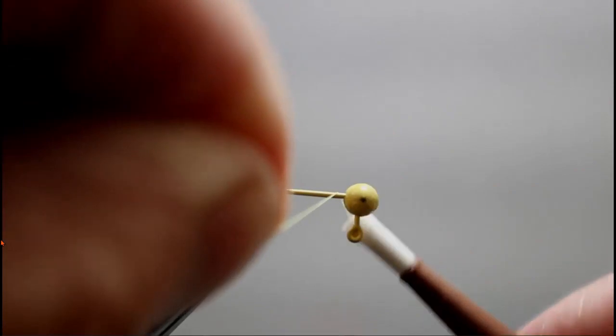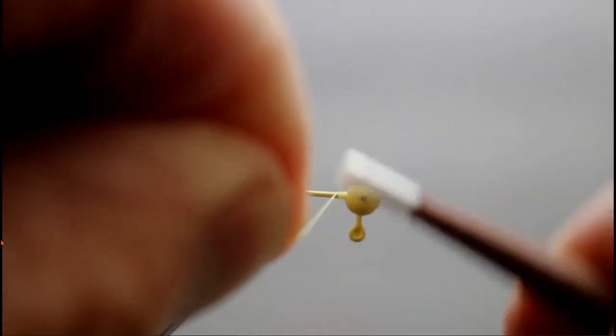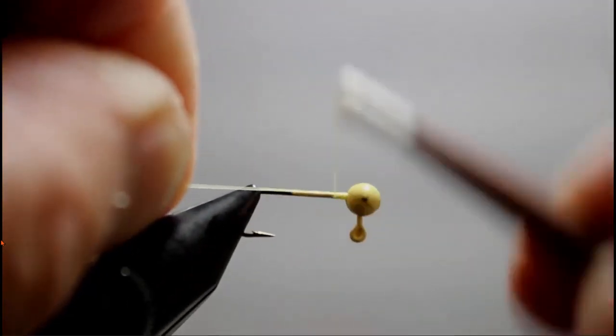Then start your thread right behind the lead and make a thread dam all the way back to the hook point, before snipping or breaking your tag free, as Terry does here.